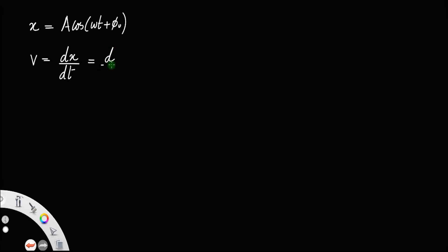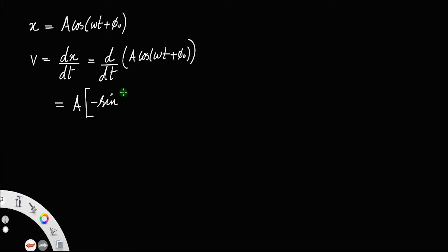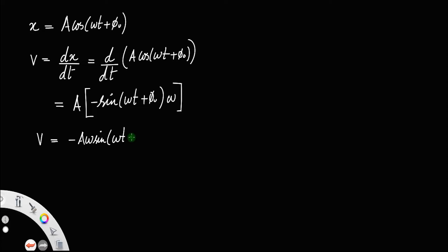The velocity V will be the derivative of displacement with respect to time. So this is equal to d/dt of x = A cos(ωt + φ₀). Since A is constant, you can take that out: A times the derivative of cos is -sin(ωt + φ₀). The derivative of ωt is ω. So velocity is equal to -Aω sin(ωt + φ₀) — call that equation number 1.